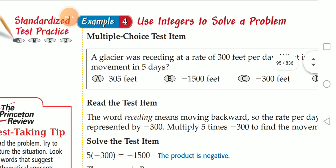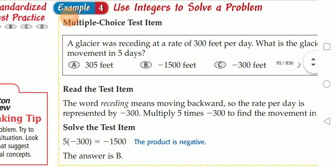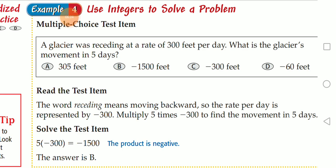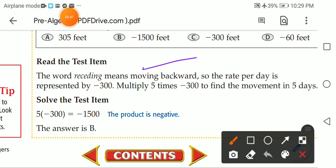Use integers to solve a problem: a glacier was receding at a rate of 300 feet per day. What is the glacier's movement in five days? The word receding means moving backward, and backward means negative. So multiply five times negative 300 to find the movement in five days. Five times negative 300 equals negative 1500.